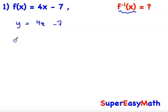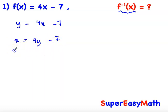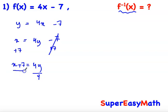So y will become x, and x will become y. So x = 4y − 7. The final step is to find y in terms of x. If we add 7 on both sides, we will get x + 7 = 4y. Divide by 4, so y = (x + 7) / 4.